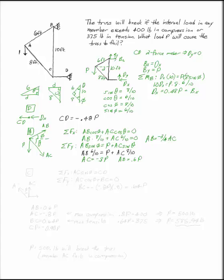I have one member left I don't know. I don't know BC. This is phi from my triangles from up top. So if I take the sum of the forces in Y, I get AC cosine phi plus BC equals 0. I know what AC is. So BC is negative times negative 0.8P times 0.8, which is 0.64P.